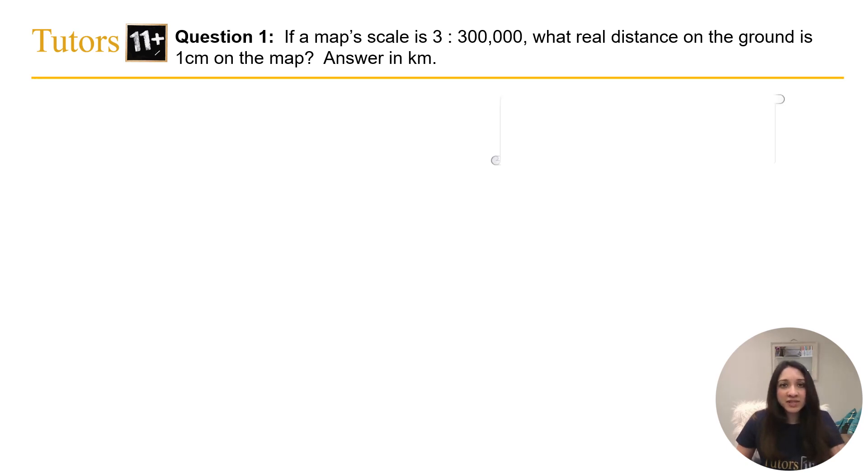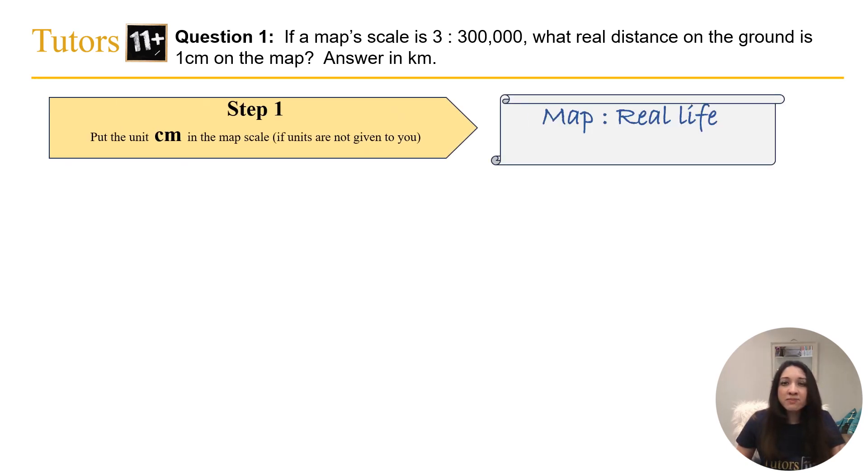Step 1, put the unit centimeters in the map scale. You must make sure you write out each line as I'm going to do here, as this is where usually children go wrong. The aim is to convert the real life part of the ratio from centimeters to kilometers. But you don't want to go straight from centimeters to kilometers, but rather do it step by step to avoid making a silly mistake.